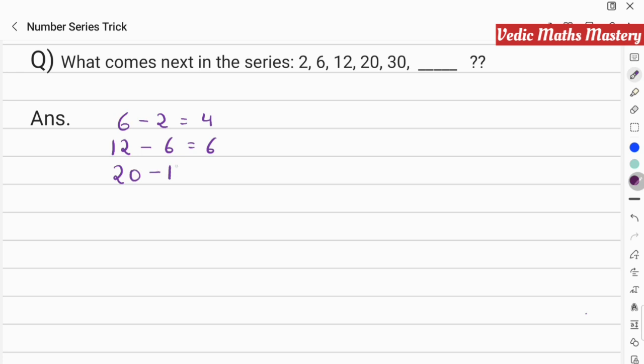Now you can see 6 minus 2 there is a 4, and 12 minus 6 there will be a 6, 20 minus 12 there will be an 8, and 30 minus 20 there will be a 10. So I will just write it down: 30 minus 20 there will be a 10.